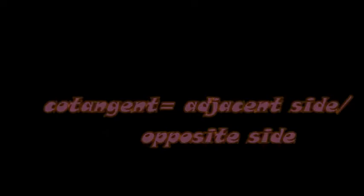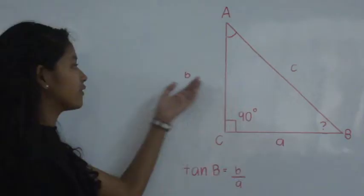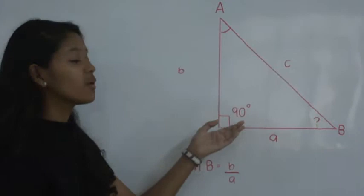We have two sides and two angles. We solve for angle B. In this example, I will use tangent. Tangent is equal to opposite over adjacent. Thus, tangent B is equal to b over a.